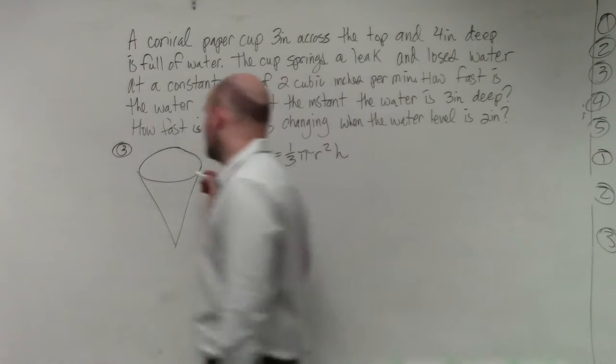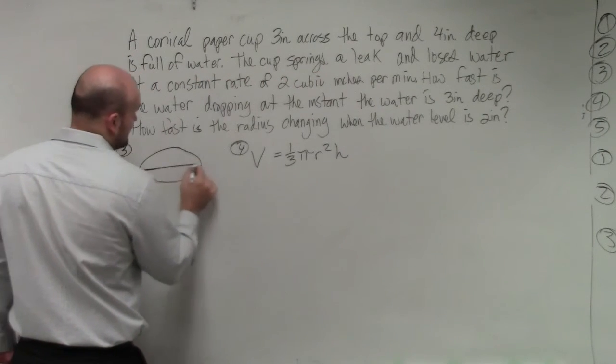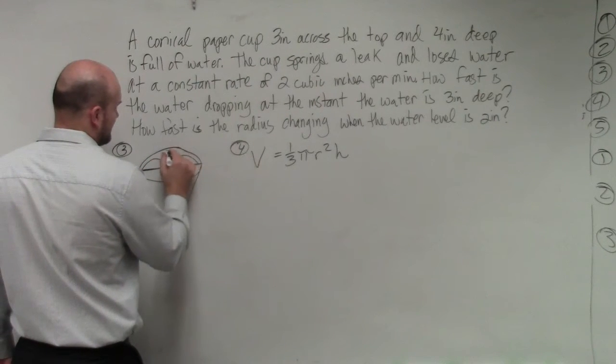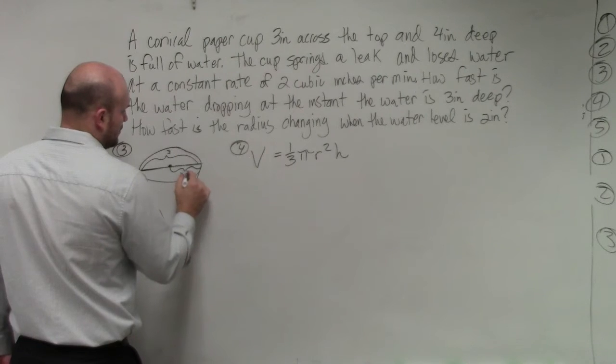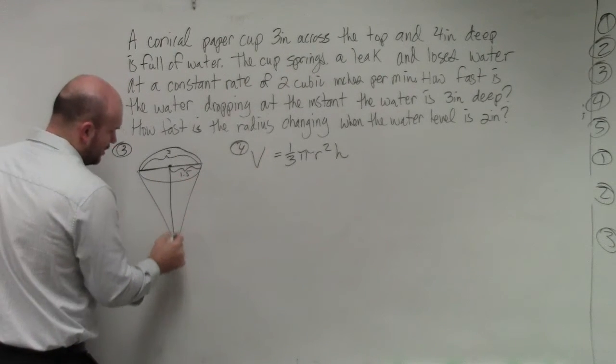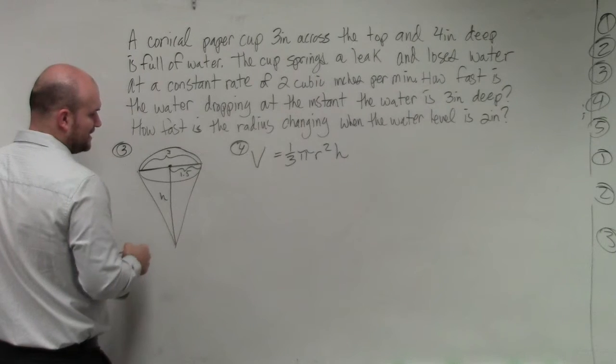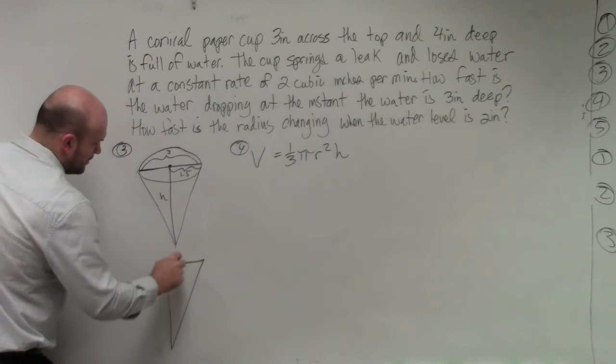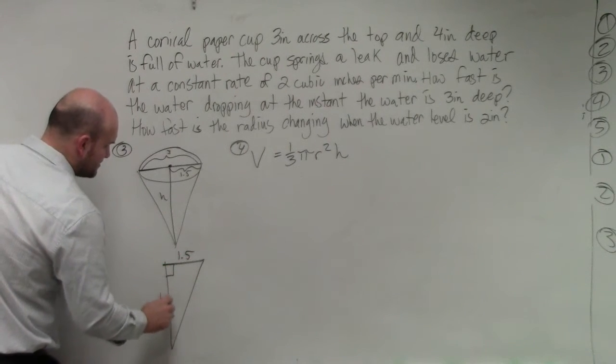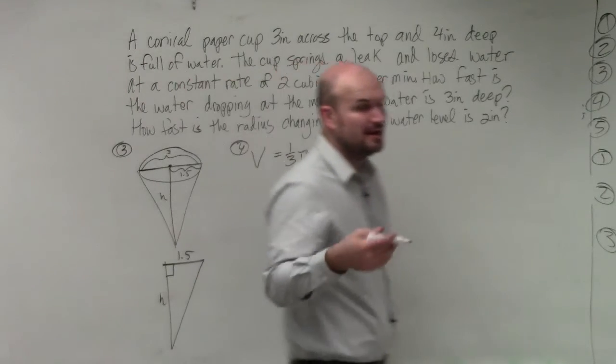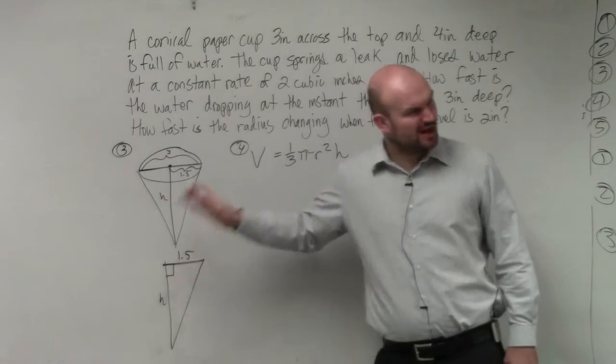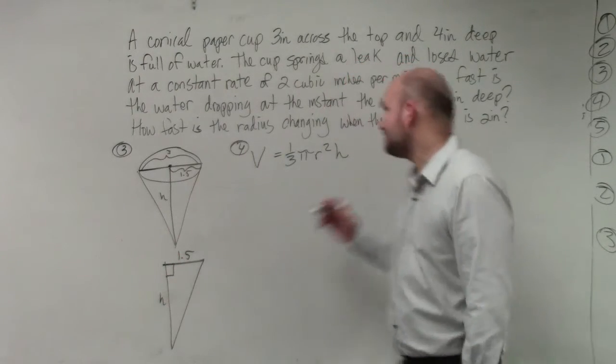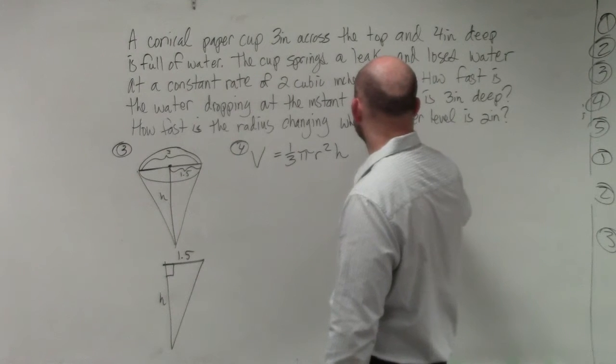If you look at if we were to actually continue this picture here, we could say that this is three inches deep. So the whole thing is three. That means from here to here is 1.5. And then all the way down, we can say that's going to be our height. So if we pull out that triangle, we can say 1.5 and that's going to be height. So what they're asking is, how far is that h dropping? So how much is h changing when our height is going to be at 3?